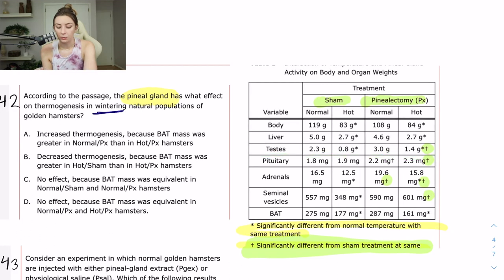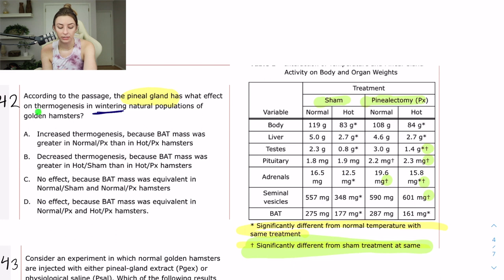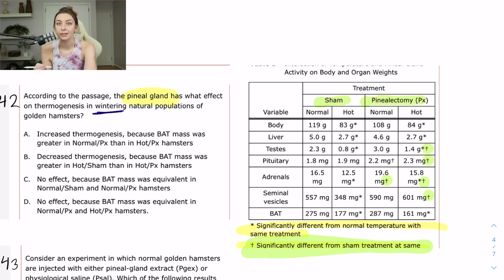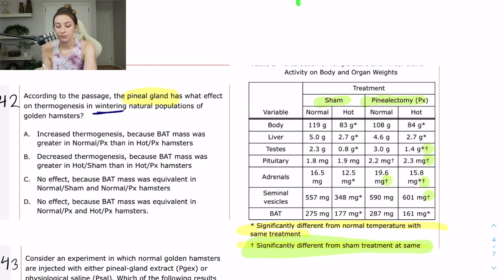The statistically significant differences between sham and pinealectomy were in testes weight, pituitary glands, adrenal glands, and seminal vesicles. Do any of those have anything to do with thermogenesis or wintering populations? Not really. What I was looking for was a difference in brown adipose tissue — if there was more BAT in the sham than in the pinealectomy, then maybe the pineal gland helps create brown adipose tissue. But I don't see any difference in the brown adipose tissue. So the answer is C.